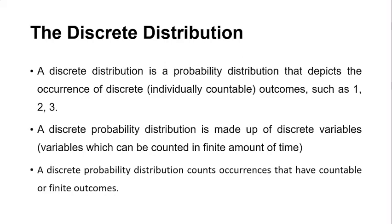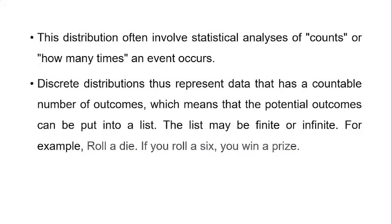The second type is the discrete probability distribution. A discrete distribution is the probability distribution that depicts the occurrence of discrete outcomes — discrete means which can be individually countable — such as one, two, three. A discrete probability distribution is made up of discrete variables, and variables which can be counted in a finite amount of time. A discrete probability distribution counts occurrences that have countable or finite outcomes. This distribution often involves statistical analysis of counts, or how many times an event occurs.